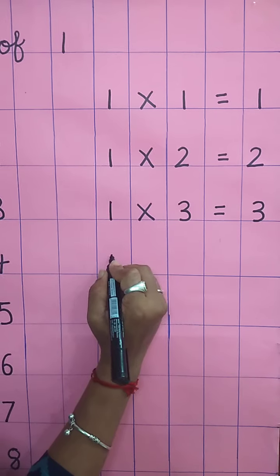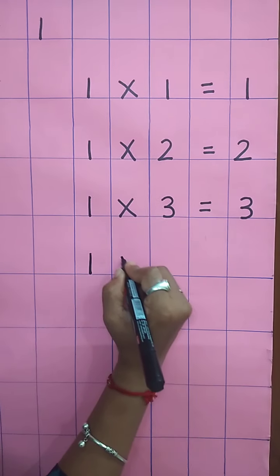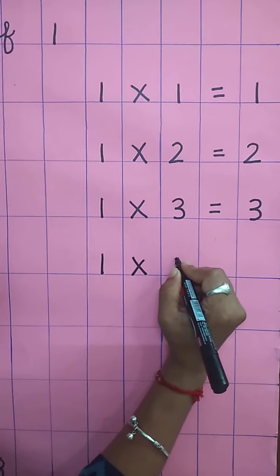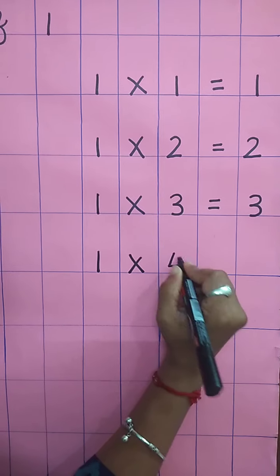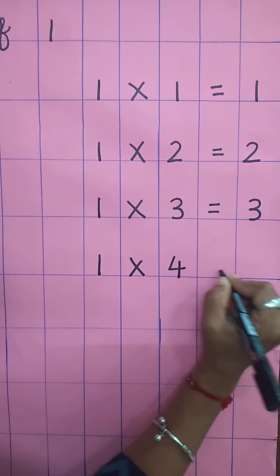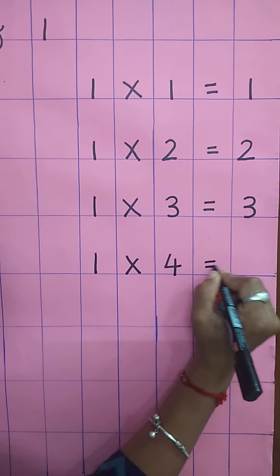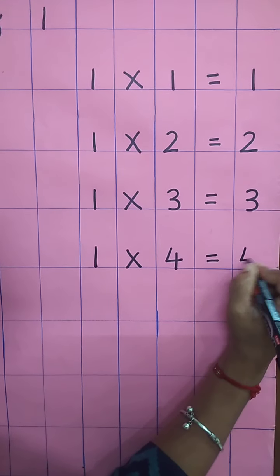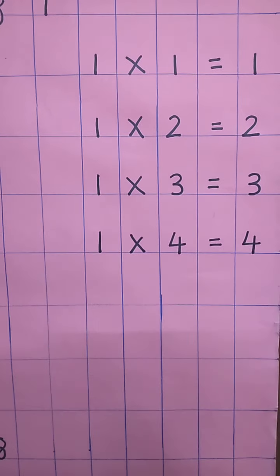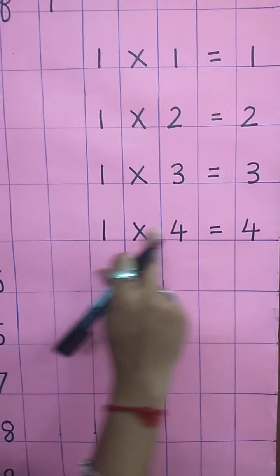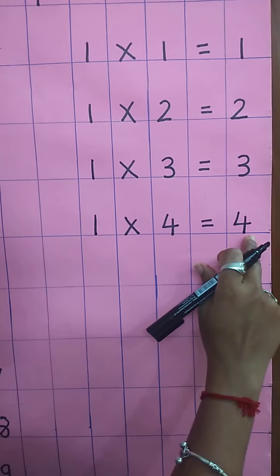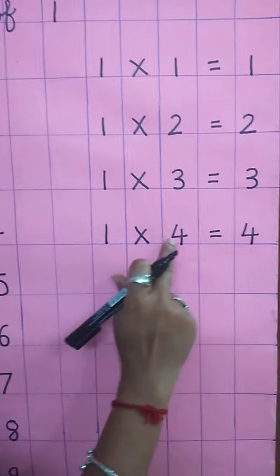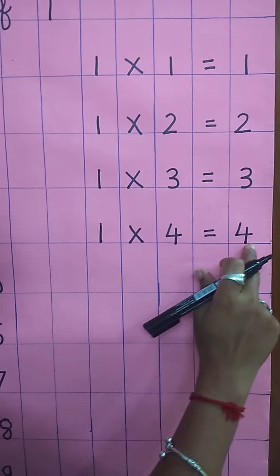Again, write down one. Multiplying sign. Write here four. Equal sign. Then again, write here four. One four's are four. One four's are four.